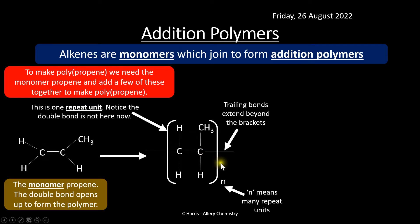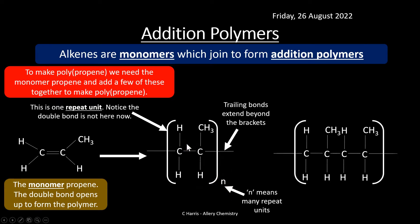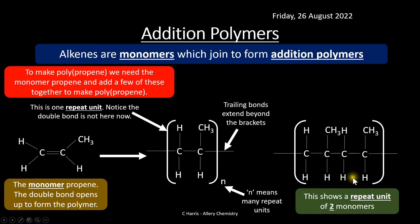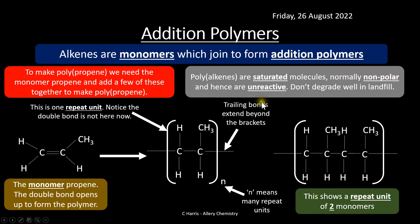It's really important that you put trailing bonds in when drawing repeat units. When the exam asks for a repeat unit, you must draw it like this: no double bond, square brackets with trailing bonds, and an 'n' indicating multiple repeat units. The exam board might ask you to draw a specific number of repeat units — make sure you draw the correct number with trailing bonds and square brackets.